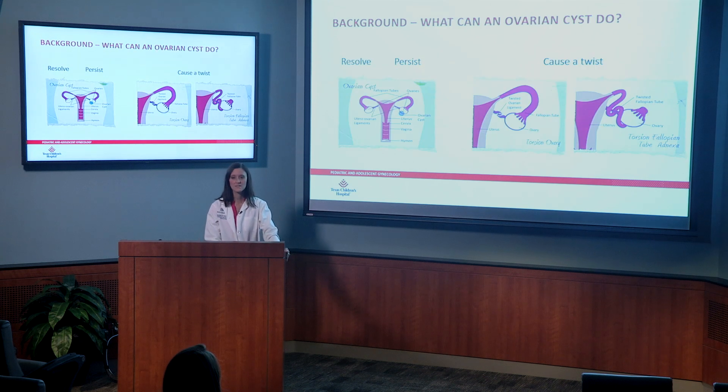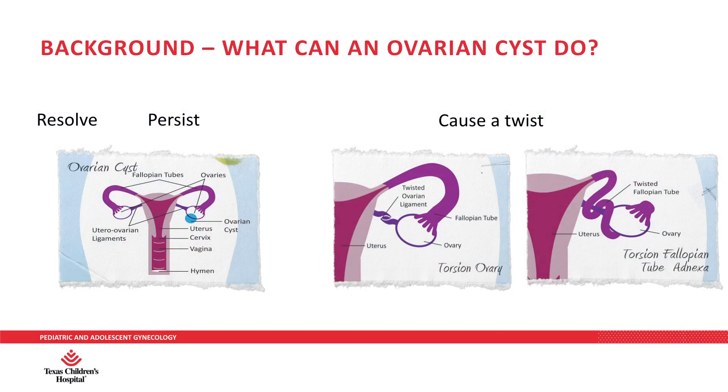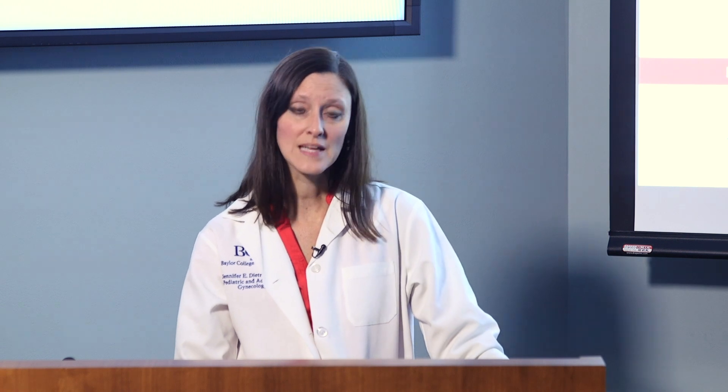What can an ovarian cyst do? They can resolve, they can persist, or they can even cause a twist. When an ovarian cyst becomes large enough and heavy enough, it cannot be well supported by the ligaments that help support the ovary in its correct anatomic position. As a result, the heaviness of the cyst — whether filled with fluid, fluid and solid components, or solid components alone — is sometimes heavy enough to result in a twist, which can affect the blood supply to the ovary and the fallopian tube.